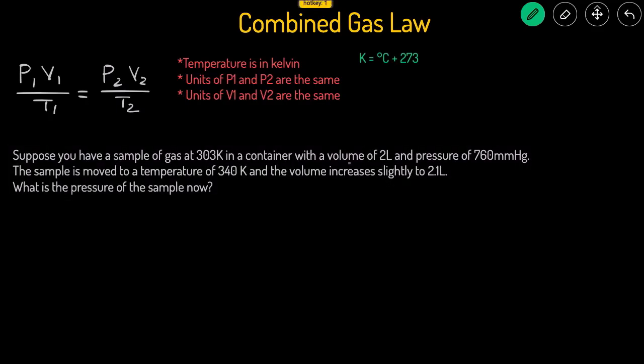Let's take a look at an example problem. Suppose you have a sample of a gas at 303 degrees Kelvin. That's temperature 1. In a container with a volume of 2 liters, that's volume 1, and a pressure of 760 millimeters of mercury, that's pressure 1. The sample is moved to a new temperature of 340 degrees Kelvin, so that's T2, the new temperature. The volume is also increased slightly to 2.1, so that's V2, the second volume.